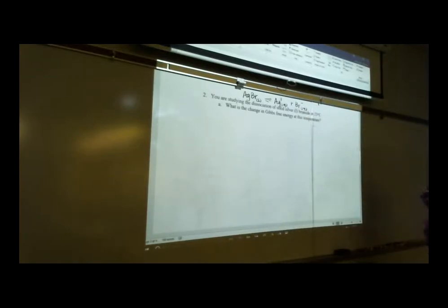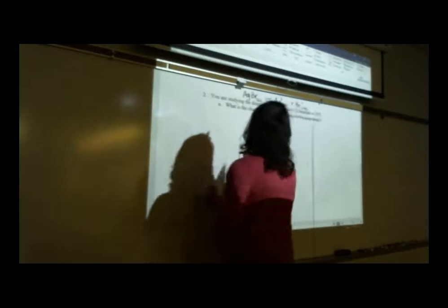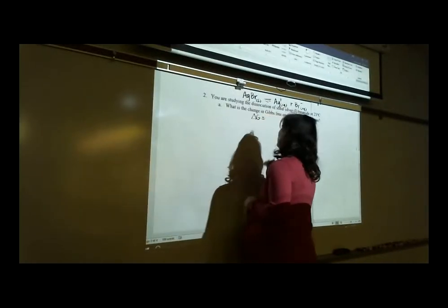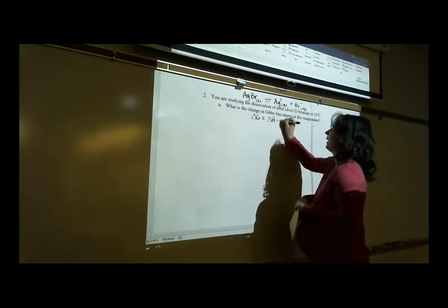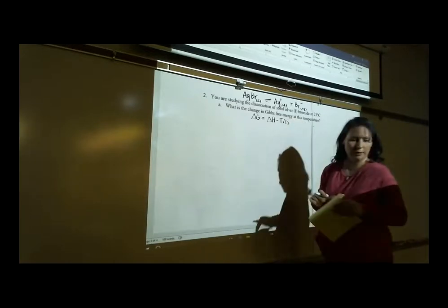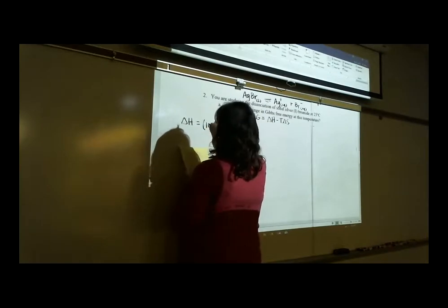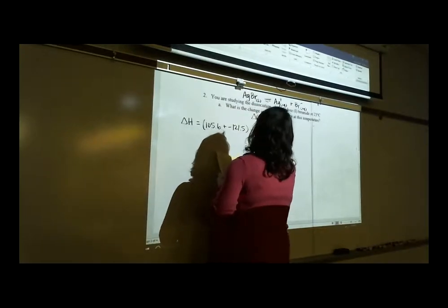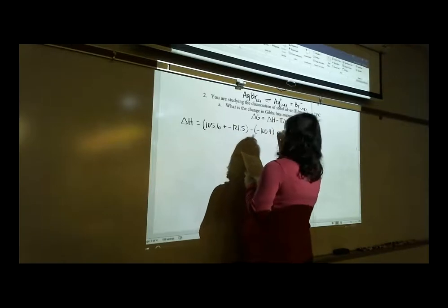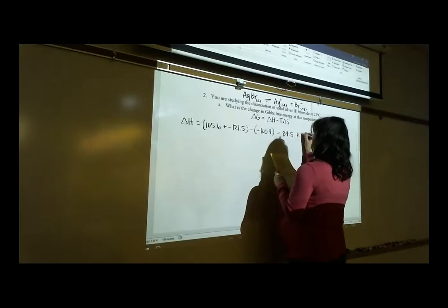We want to know the change in Gibbs free energy for this dissociation. ΔG = ΔH − T·ΔS. Using the reference page: for ΔH, I got 105.6 + (−121.5) − (−100.4), which gave 84.5 kilojoules. For ΔS, I got 72.68 + 82.64 − 107.1 = 48.22 joules. Do we agree within rounding?